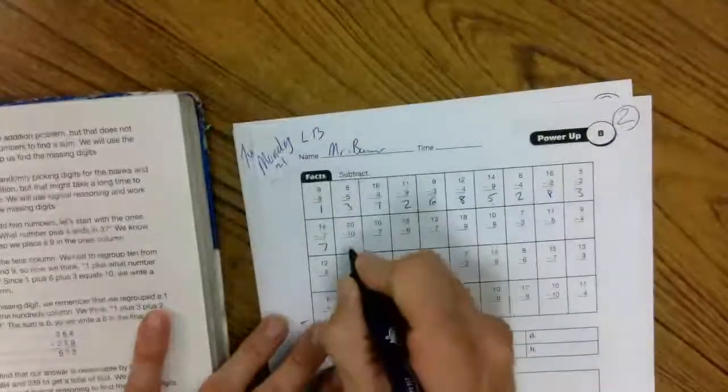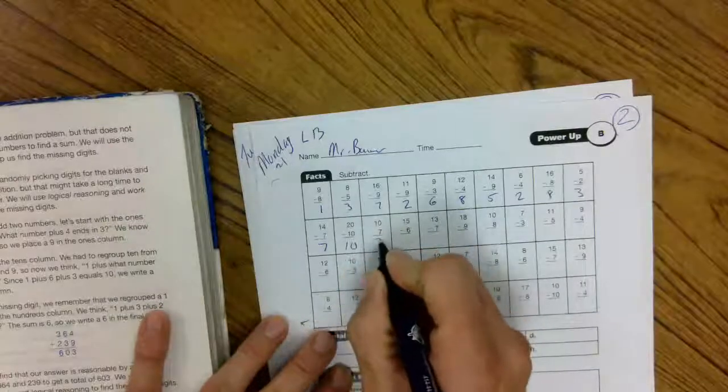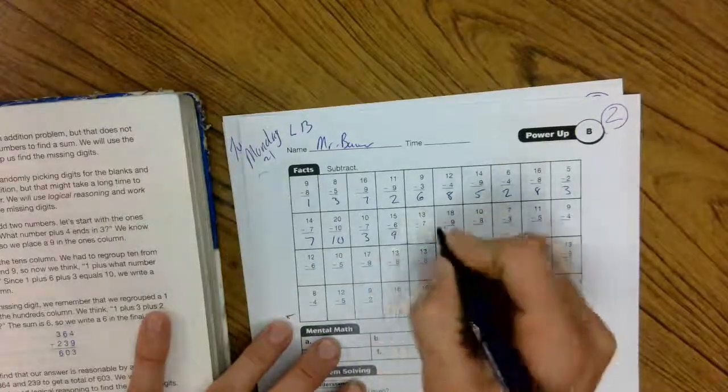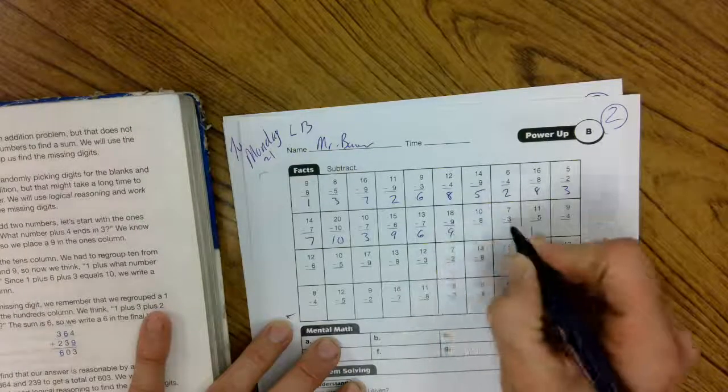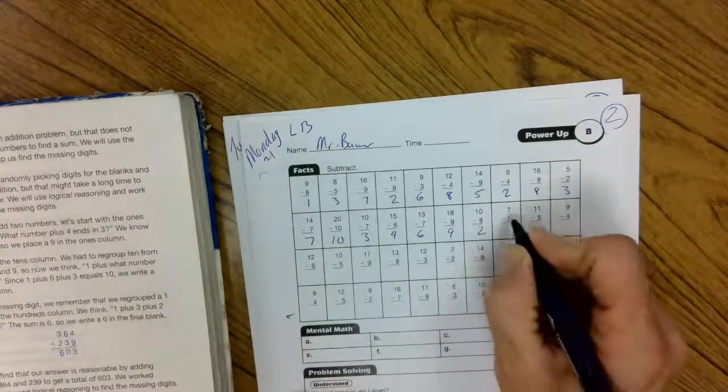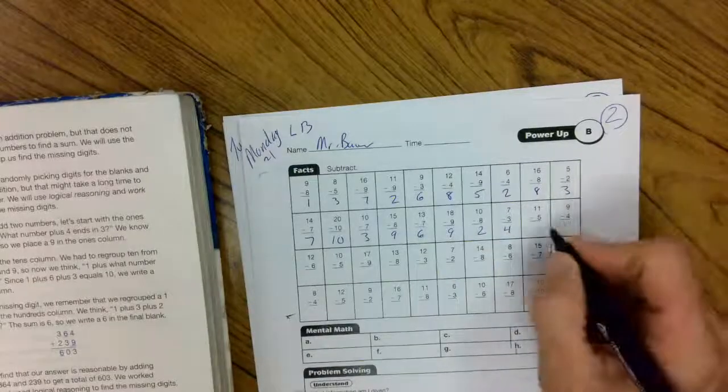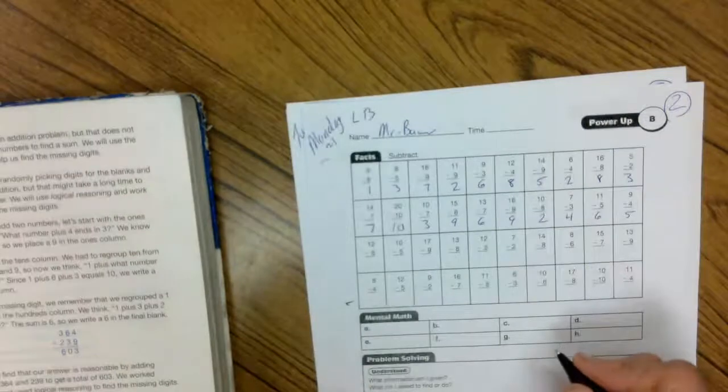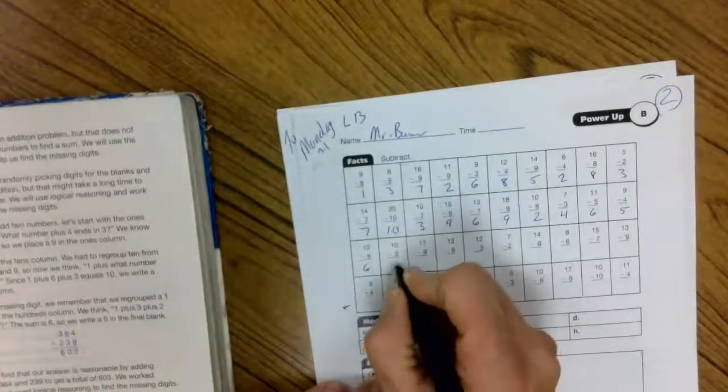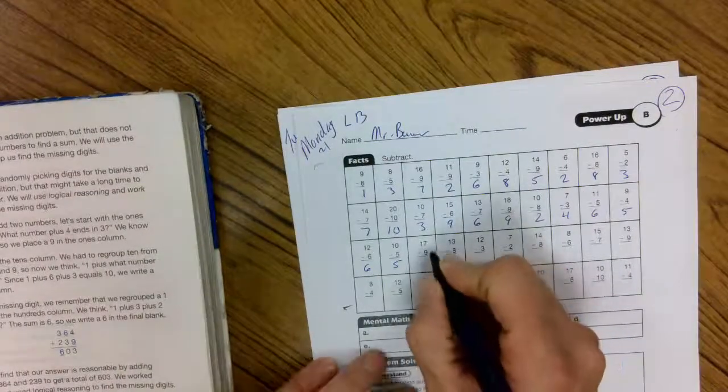14 minus 7 is 7. 20 minus 10 is 10. 10 minus 7 is 3. 15 minus 6 is 9. 13 minus 7 is 6. 18 minus 9 is 9. 10 minus 8 is 2. 7 minus 3 is 4. 11 minus 5 is 6. 9 minus 4 is 5. 12 minus 6 is 6.